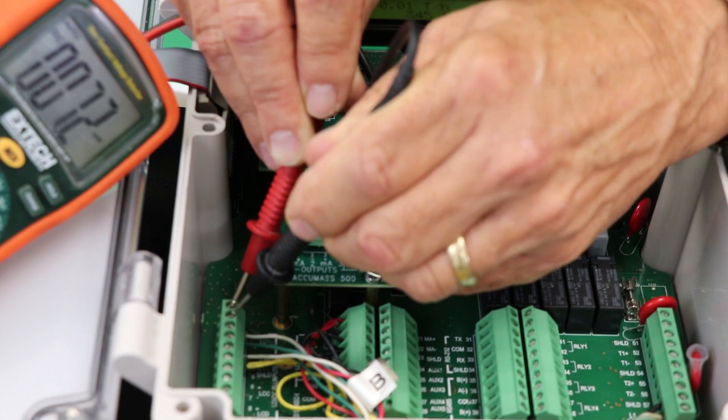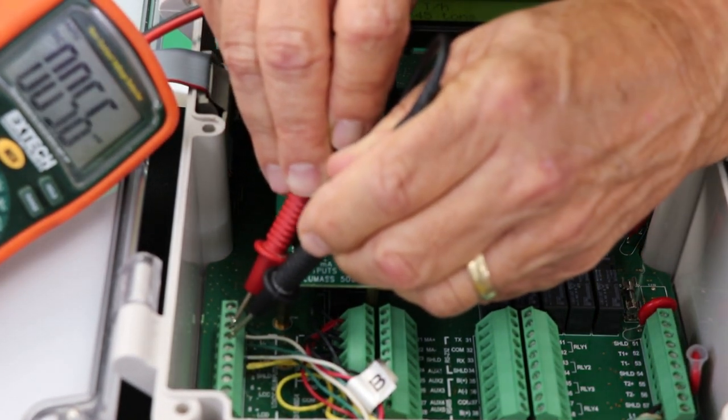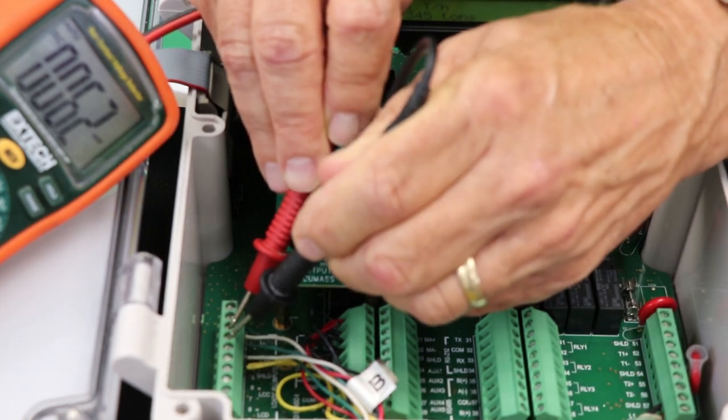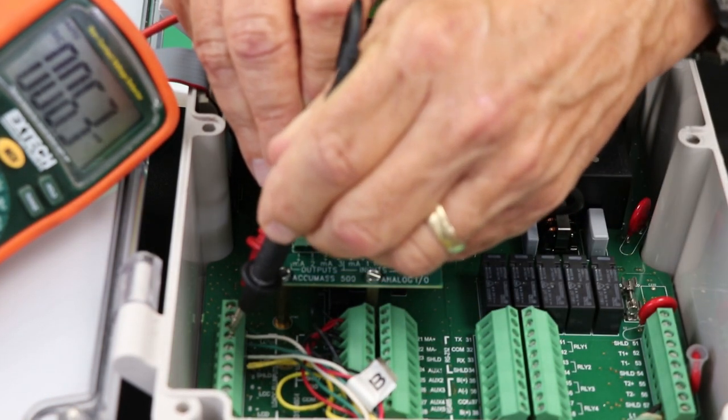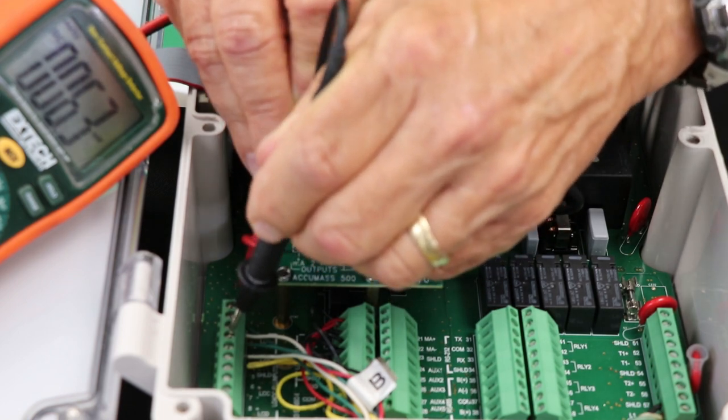Right now we're getting 7.2 millivolts on load cell A. On load cell B we're getting 6.2 millivolts. So there's a good chance that this is probably a working load cell and there's no other issues that are obvious for the load cell system.